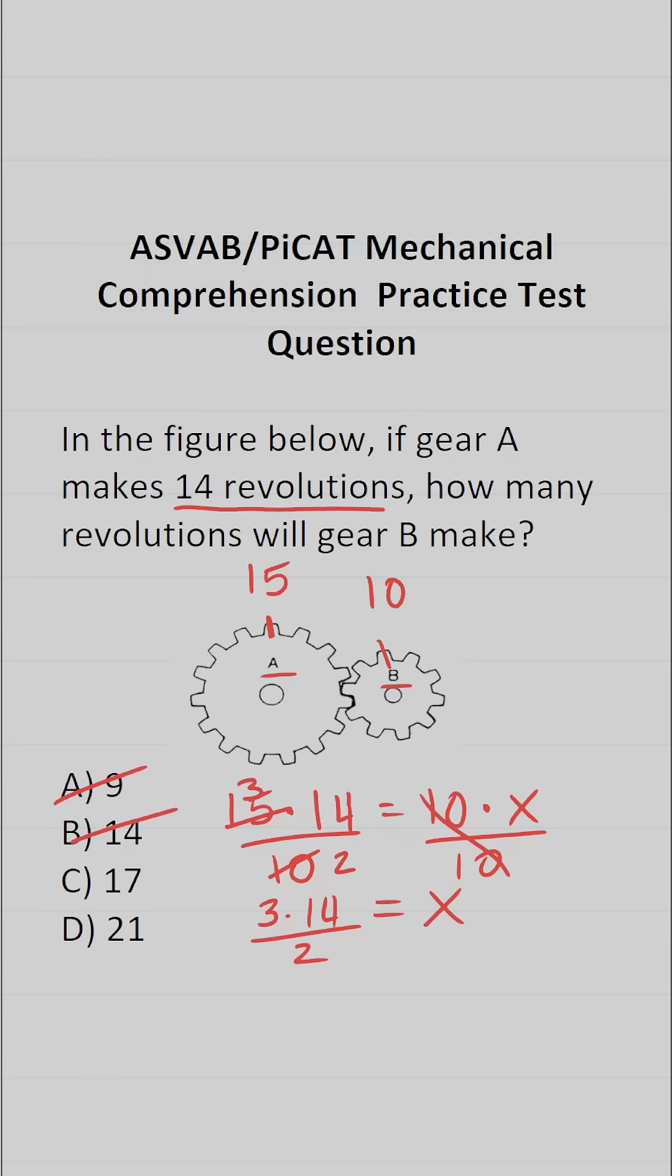And again, we can simplify this even further. 2 goes into 2 one time. 2 goes into 14 seven times. This is 3 times 7 divided by 1, which is just 3 times 7. 3 times 7 is 21.